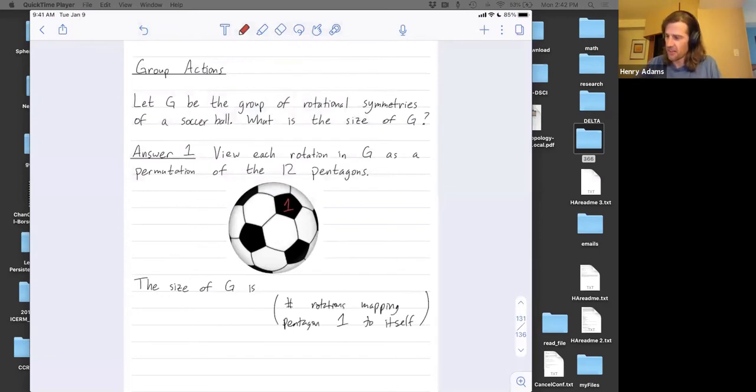How many rotations map pentagon one to itself? Well, there's five different rotations, right? Because I could sort of spin around here, five different steps before I get back to where I started. So this is going to be five.